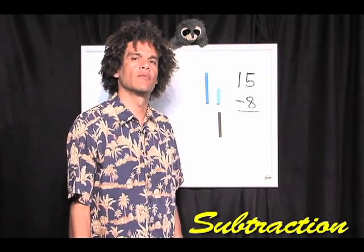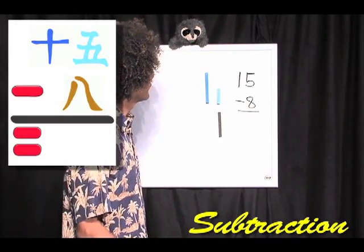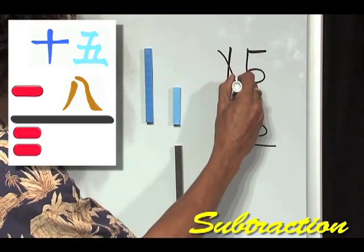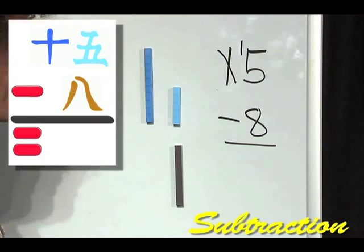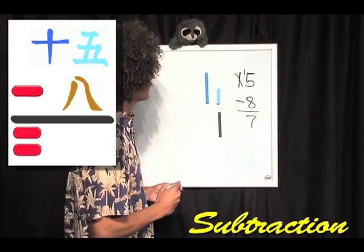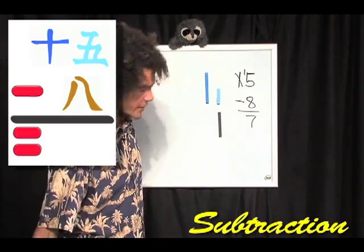Now, here's a slightly more complex problem. 15, take away 8. Now, I've actually seen students do this. And then they count backwards. All right. Let's take a look at it a slightly different way.